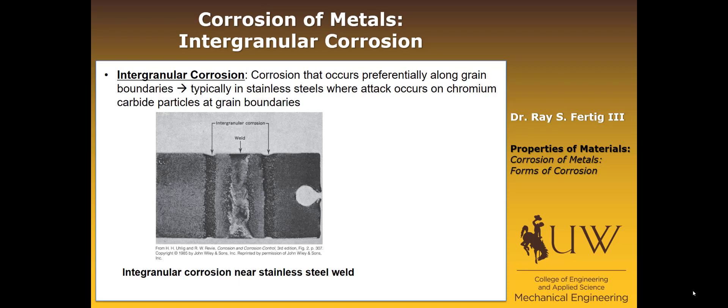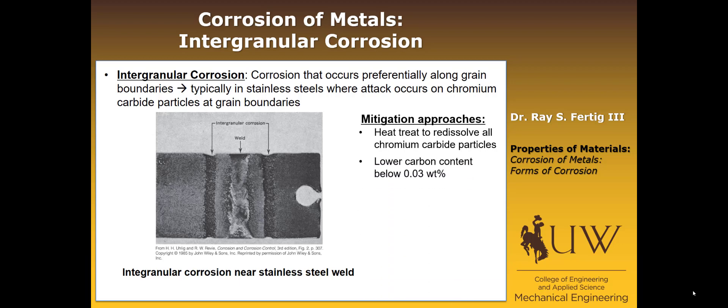That led to enhanced corrosion at those locations. Mitigation approaches include heat treating the stainless to redissolve all the chromium carbide particles so there isn't a concentration at the grain boundary, lowering the carbon content in your steel below 0.03 weight percent to reduce the likelihood of forming chromium carbide particles, or alloying the stainless with niobium or titanium, which also helps.